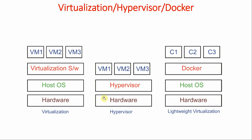Now the industry is slowly moving towards another type of virtualization which we call lightweight virtualization. In that, we again have hardware. On that we install the host operating system — preferably Linux. On that we install Docker, and on Docker we get containers. In the case of virtualization or hypervisor, we were getting VMs, but in the case of Docker, we get containers.